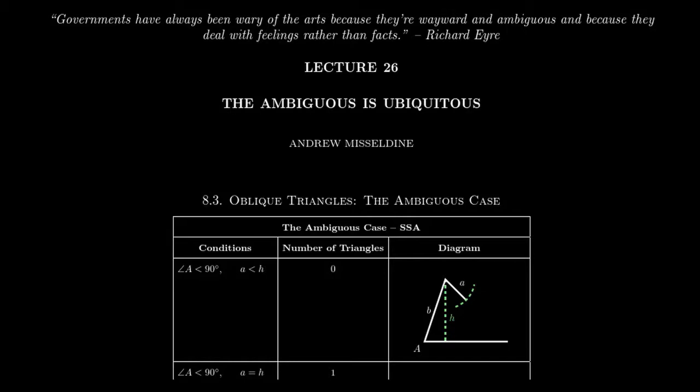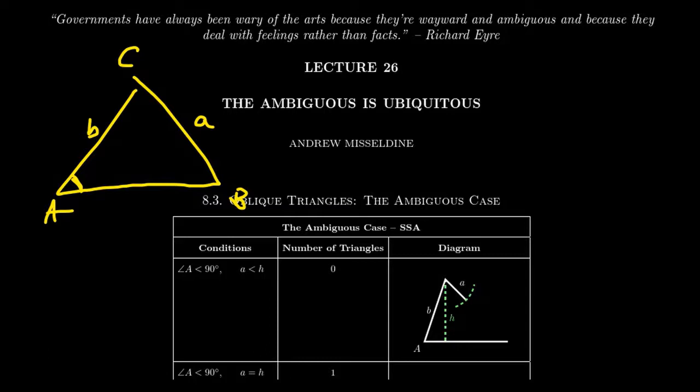There's one more case that we have to consider, and this is the case of side-side-angle. With our usual triangle situation labeled A, B, and C, we'll assume that we know angle A, side B, and side A. This gives us our side-side-angle situation. We do have an AOS, that is, an angle-opposite-side pair.